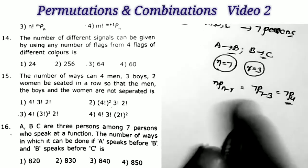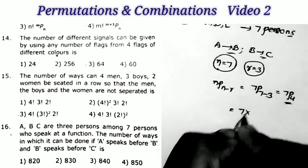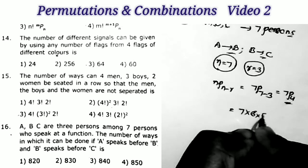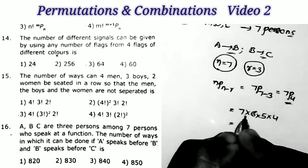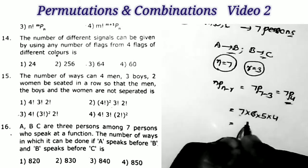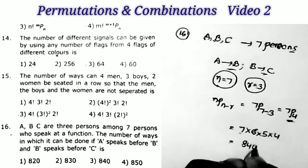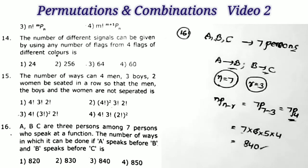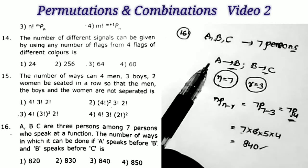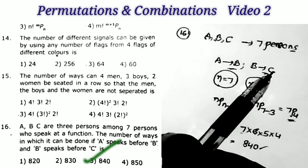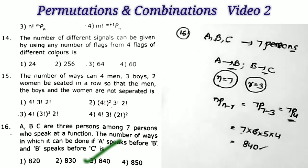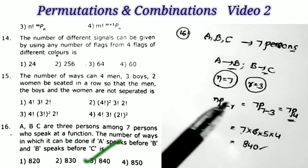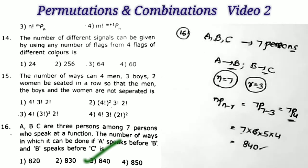7P4 equals seven into six into five into four, which equals 42 into 20, that is 840. That is the third option. When we have the condition A speaks before B and B speaks before C, directly apply the formula N P (N minus R), where N is the total number of persons and R is the number of persons with the ordering condition — here R equals three.